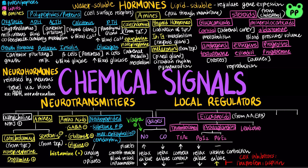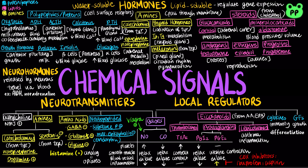Another type of eicosanoids are leukotrienes, which are involved in asthma, pathology, and inflammation. Cytokines are a large group of proteins, peptides, or glycoproteins that are secreted by specific cells of the immune system and function in regulating various immune responses. Growth factors are actually a subset of cytokines that stimulate cell growth, differentiation, survival, inflammation, and tissue repair.